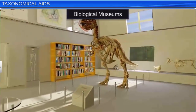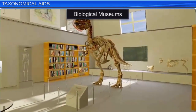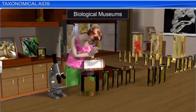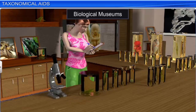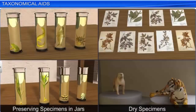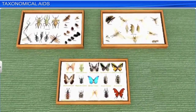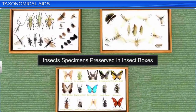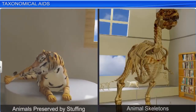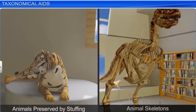Biological museums, set up in educational institutions, also act as taxonomical aids. These museums have collections of preserved plants and animals which are used for study and reference. They are preserved in jars using preservative solutions or as dry specimens. Insects are collected, killed, pinned, and then preserved in insect boxes. Larger animals are typically stuffed and preserved, or their skeletons are displayed.